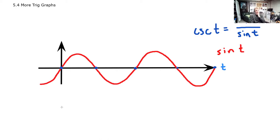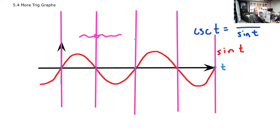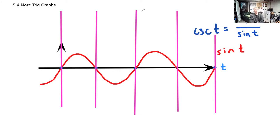Wherever sine is zero, we can't take the reciprocal, so we get vertical asymptotes. Division by zero can produce either a hole or an asymptote; in the case of cosecant, as we get closer to these values, the function goes faster and faster up or faster and faster down. These are vertical asymptotes at every value where sine is zero.